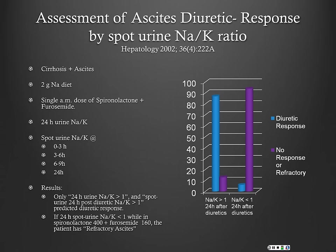They found that the spot urine sodium-to-potassium ratio was just as good as a 24-hour collection. If the sodium-to-potassium ratio is greater than 1 at 24 hours after diuretics, the diuretic response is upwards of 90%. If it's less than 1, the patient is typically not responding and you need to increase the dose.